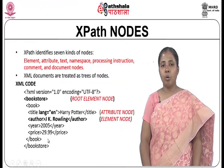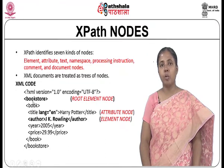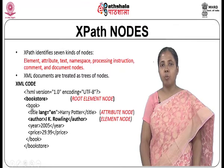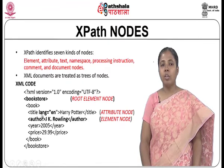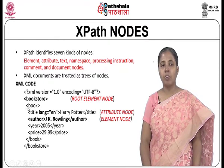This is an XML code taken for reference in the coming slides to form a query expression. The XML code describes a bookstore. Bookstore is the root element node. Within this bookstore we have any number of book elements; in this example we have specified one book element. This book element has child elements: title, author, year, and price. Language is an attribute node — it is an attribute of the title element node. Author is one of the element nodes under this book element.